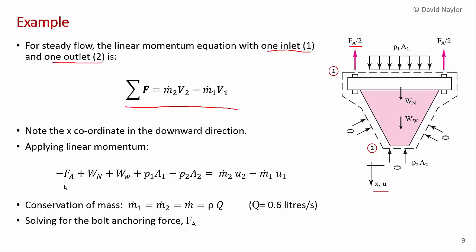So let's apply our linear momentum theorem. We have the sum of the forces. FA acts in the negative X direction. So we have a minus sign here. The weight of the nozzle acts in the positive direction. The weight of the water. Pressure at the inlet acts downward, so in the positive direction. Pressure at the discharge acts upward. This pressure is going to be zero, but I've included it just so you can see the full expression.